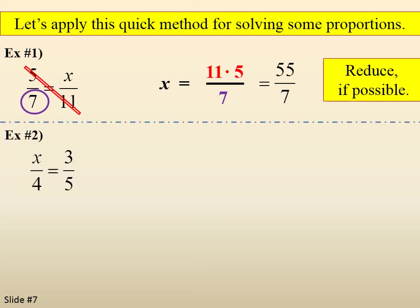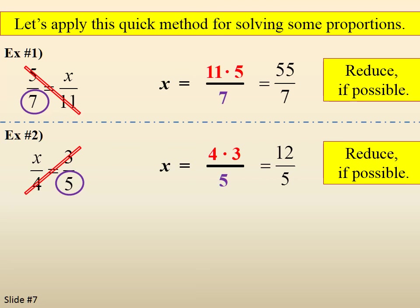How about this one? x equals a fraction where the numerator is the complete diagonal, 4 times 3, and the denominator is the number opposite, which is 5. No reducing possible, and we end up with 12/5.